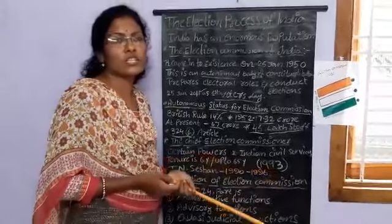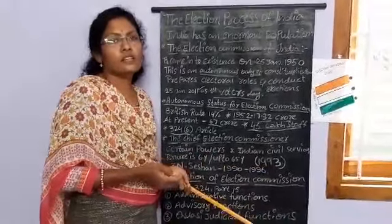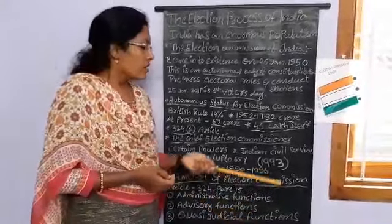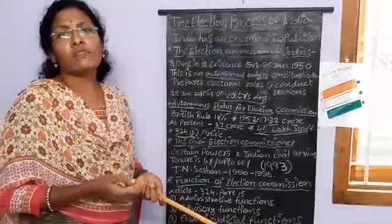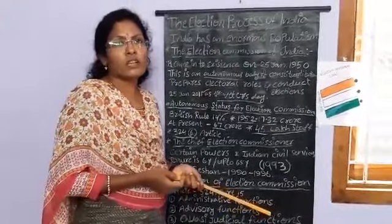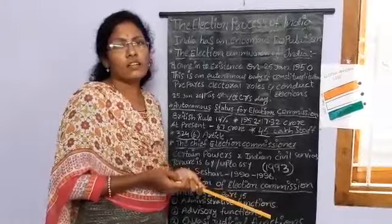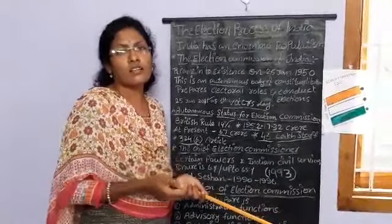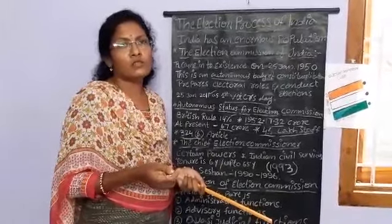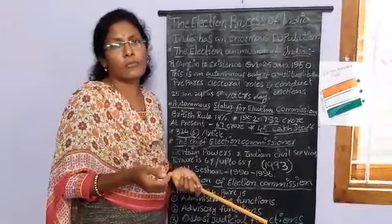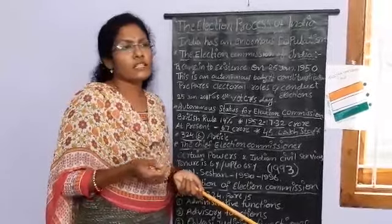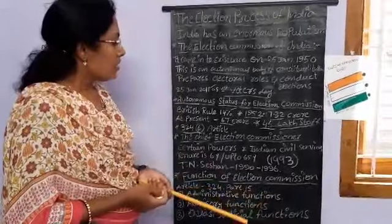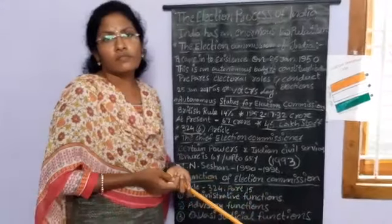The commission consists of one Chief Election Commissioner and two other Election Commissioners. There is no difference among the Chief Election Commissioner and other Election Commissioners regarding their salaries, designations, and power. Usually, the decisions are taken unanimously or by majority vote.